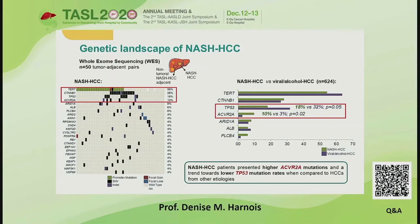When compared with viral and alcohol-related hepatocellular cancers, they observed similar mutation rates in the most frequently altered genes except for two: TP53 and ACVR2A. Specifically, non-alcoholic steatohepatitis associated hepatocellular cancer patients presented with significantly higher ACVR2A mutations and trended toward lower TP53 mutations when compared to HCCs from other etiologies.